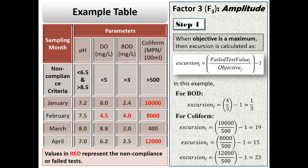Similarly, excursion of coliform count can be calculated for its three failed test values.